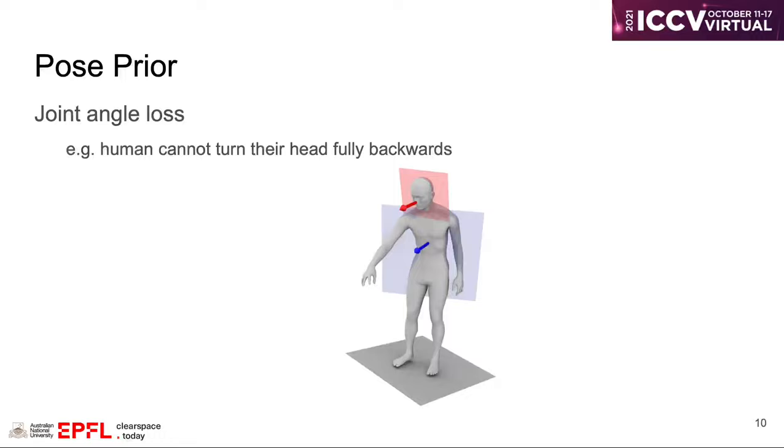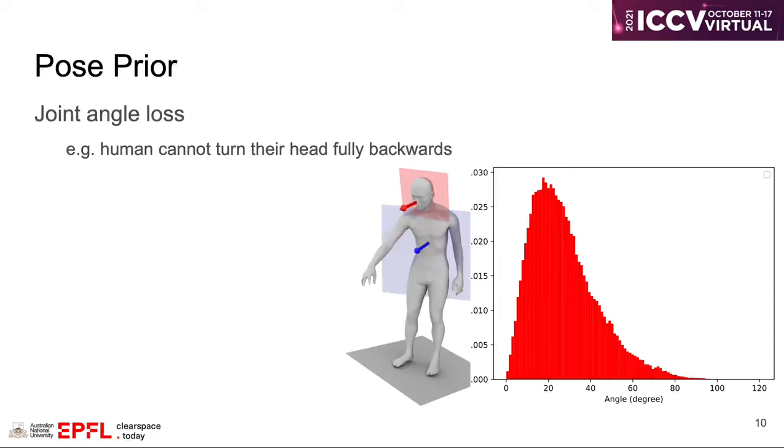Given a pose, we define the orientation of the head as the red arrow and the orientation of the body as the blue arrow. We plot the angle histogram with all training samples, and as we can see, the angle is clearly bounded.